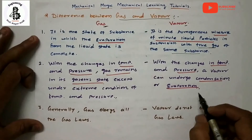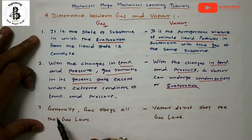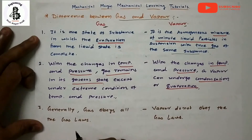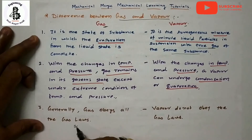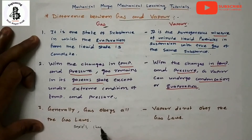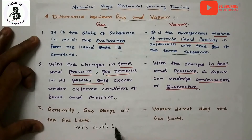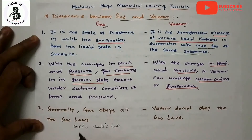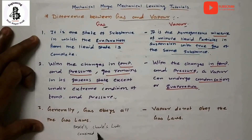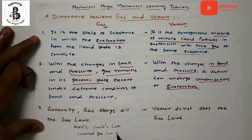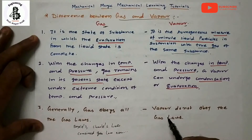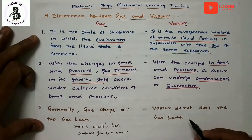The second difference: with changing temperature and pressure, a gas remains in its gaseous state except under extreme conditions — it does not change phase. But in the case of vapor, with changes in temperature and pressure, a vapor can undergo condensation or evaporation — the gaseous part converting to liquid or liquid converting to vapor. The third difference: gas obeys all gas laws like Boyle's law, Charles' law, and the combined gas law, but vapor does not obey the gas laws.